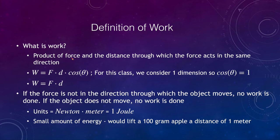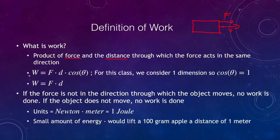Work is the product of force and the distance through which the force acts in the same direction. So if an object moves to the right and you have a force pushing to the right, then work is being done. That's the force and this is the velocity — the object is moving to the right and the force is in that direction, so that force is doing some work on it. In actuality, work is equal to the force times the distance times the cosine of the angle through which the force acts.